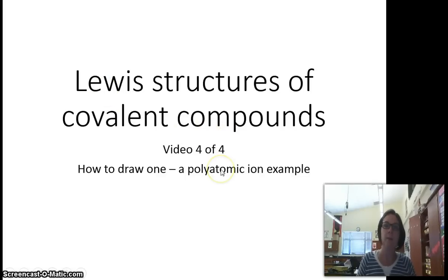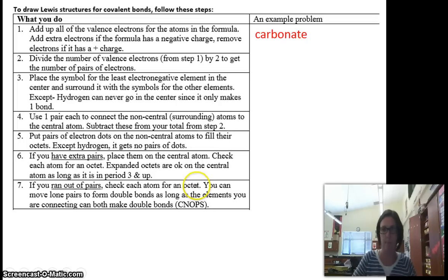In this video, the last one, I'm going to show you how to do a Lewis structure of a polyatomic ion. So for this one we're going to do carbonate. Carbonate is CO3 and it has a negative 2 charge.